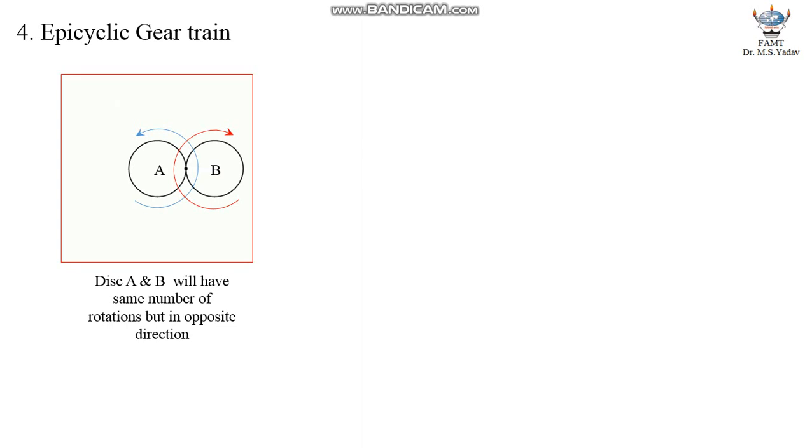Now, we will free the axis of rotation of disc B and allow disc B to turn upon and around disc A, like this. Now what do you think, how many rotations does disc B will turn about its own center of rotation, while moving upon and around disc A?